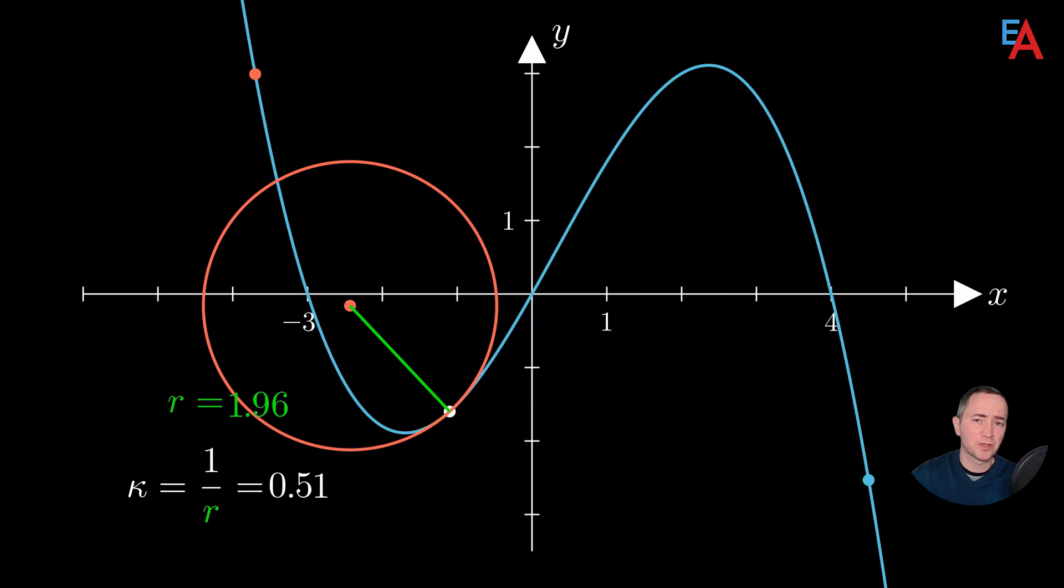But a second situation is also possible when the red point, starting from the same place, reaches the white point and at this point chooses to continue moving in a circle.